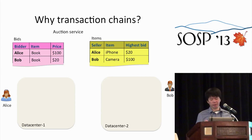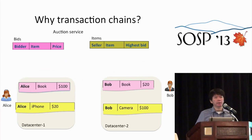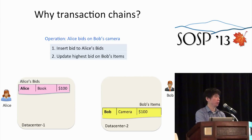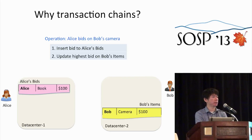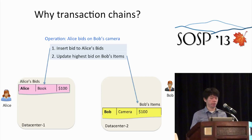The bids table is sharded according to the bidder column and distributed across data centers. The item table is sharded according to the seller column. So Alice's data is put into data center 1, which is closer to her, and Bob's data is put into data center 2, closer to him. Now consider the operation where Alice puts a bid on Bob's camera. This involves two steps: inserting a bid request into Alice's bid shard, and updating the highest price on Bob's camera. The auction service logic would like to execute these two steps in one transaction, but the data is in two data centers, resulting in a distributed transaction with high latency.